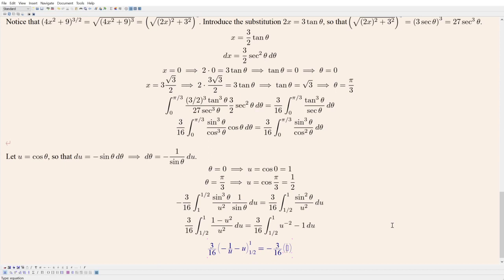Then when I put in one half, so one over one half is two, two plus one half is 2.5, which is five halves.